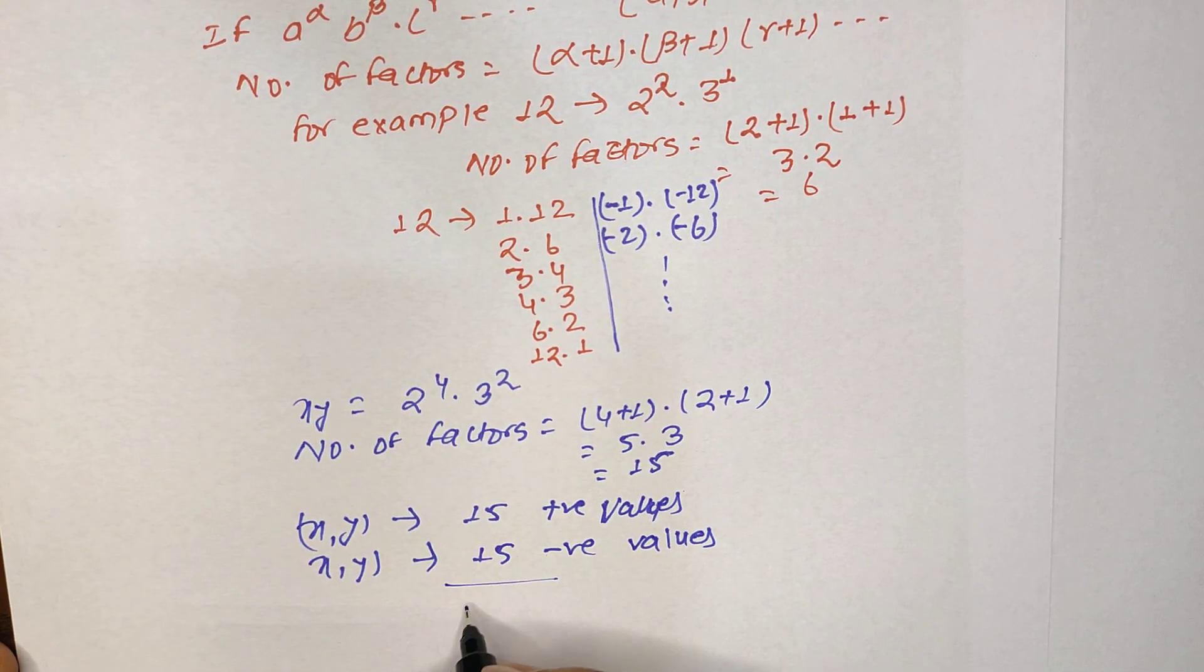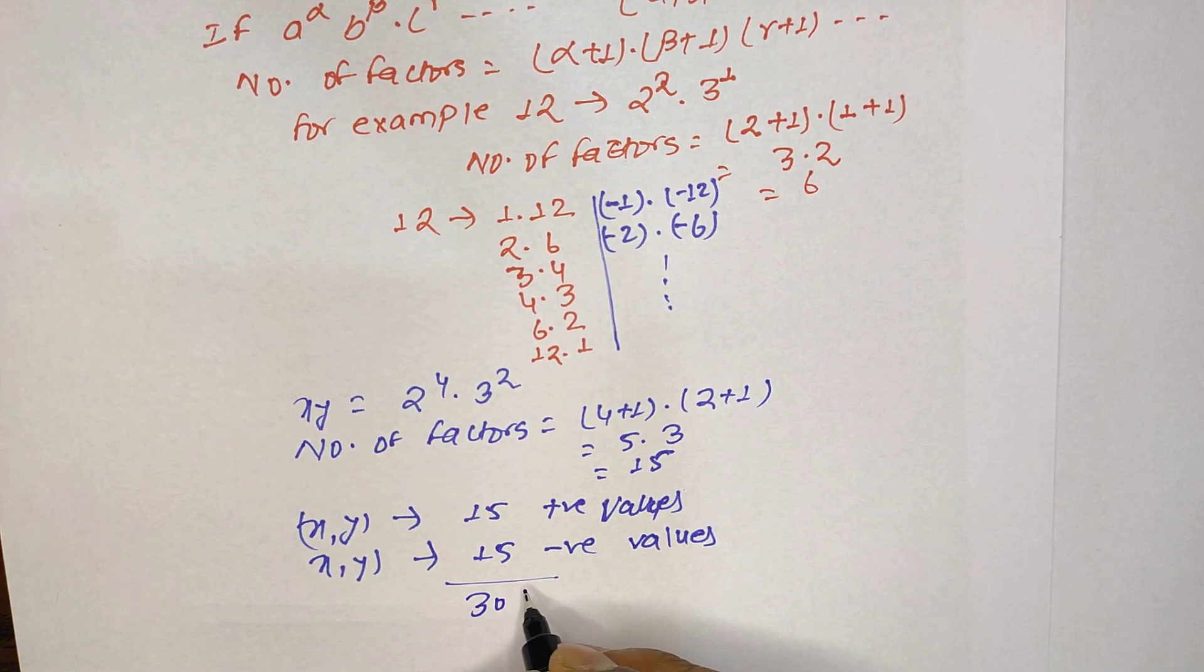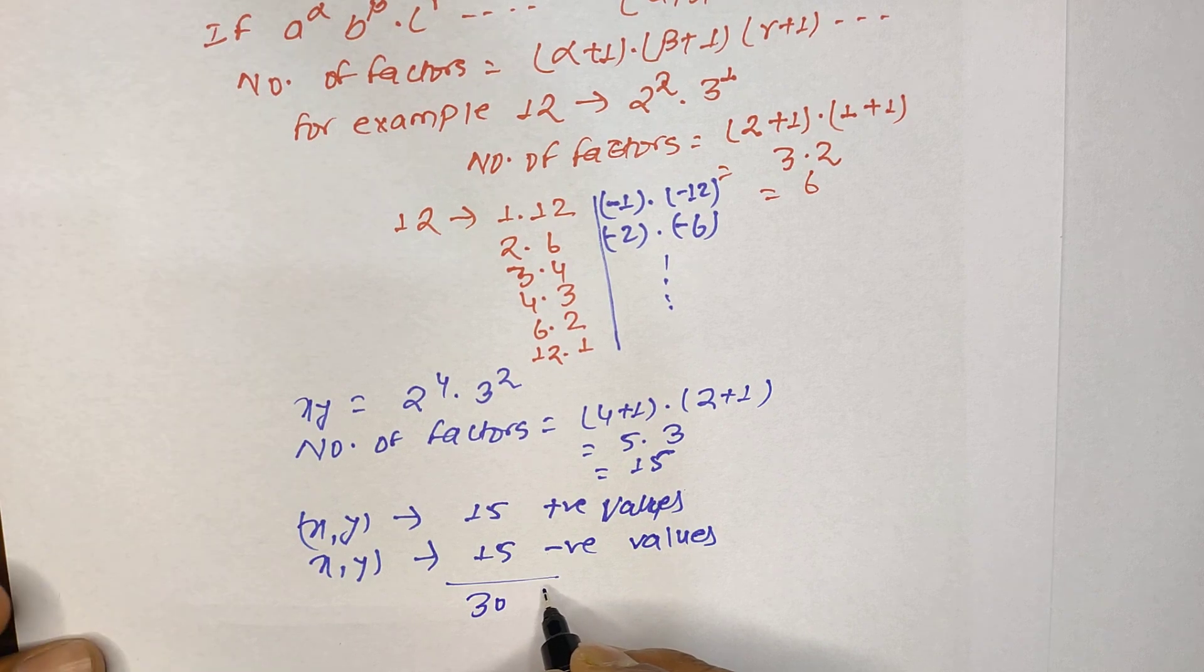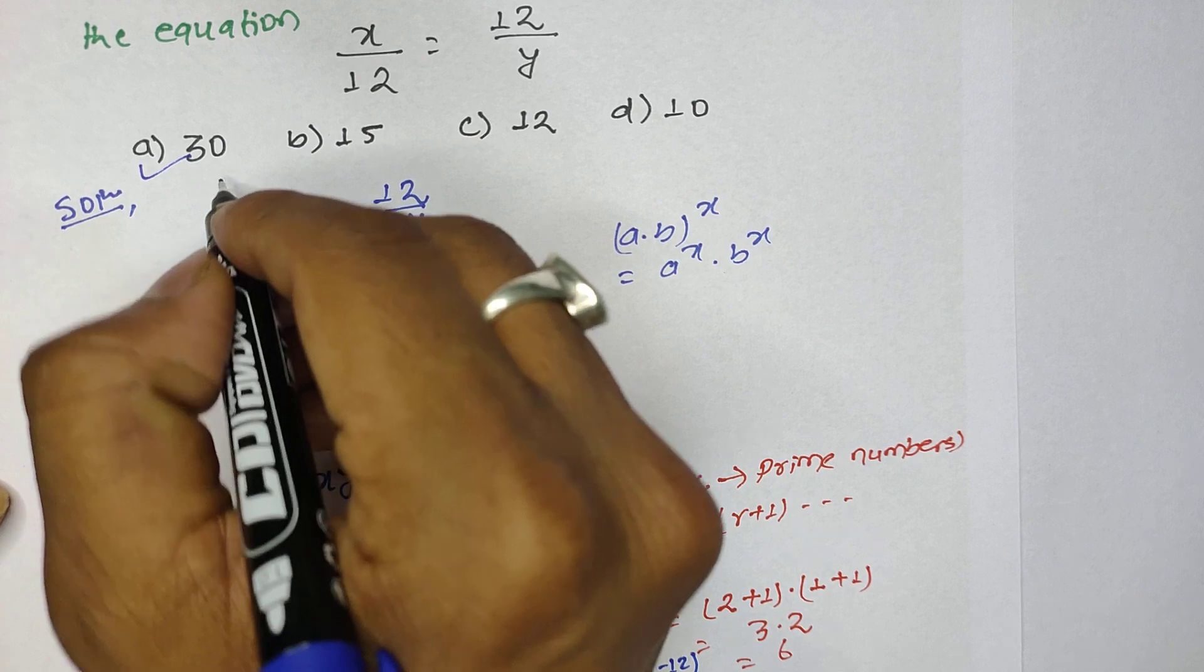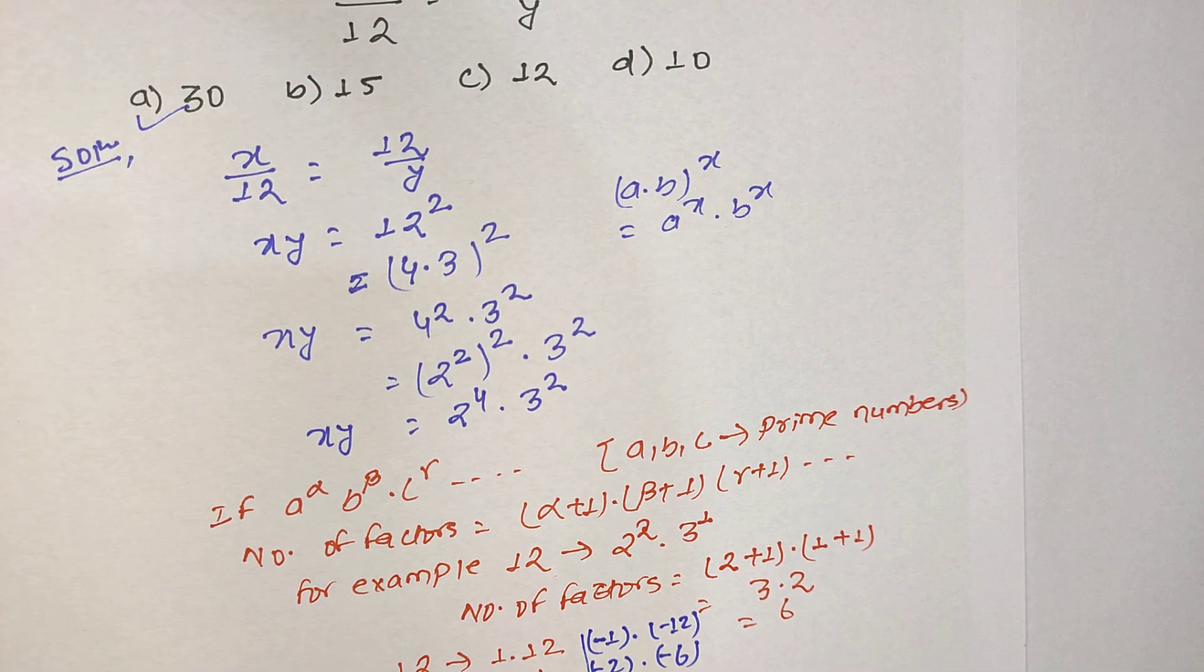So here the total number of ordered pairs are 30. It can take 30 number of ordered pairs, so it means that our correct answer is 30.